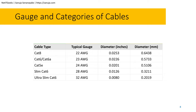Looking at gauge and cable categories: Cat8 uses 22 gauge, Cat6 uses 23 gauge, Cat5e uses 24 gauge, slim Cat6 and ultra-slim Cat6 have different gauges. The diameter goes down as you go down this list. Cat8 cable would have a bigger diameter core compared to Cat6 cable. For Power over Ethernet applications, I prefer to use regular Cat5e or Cat6 non-slim cables because of the gauge difference.